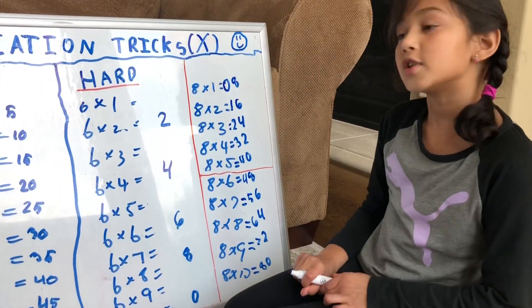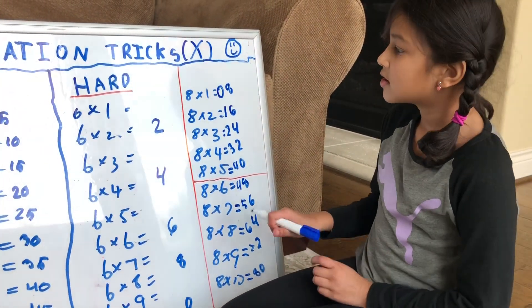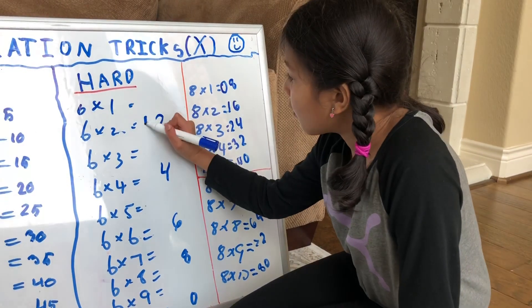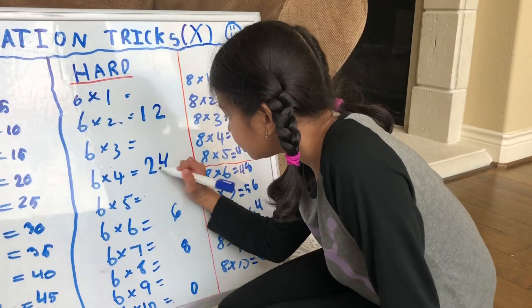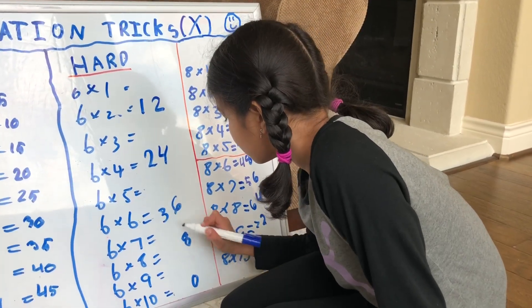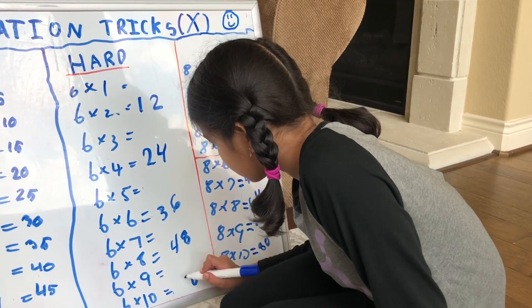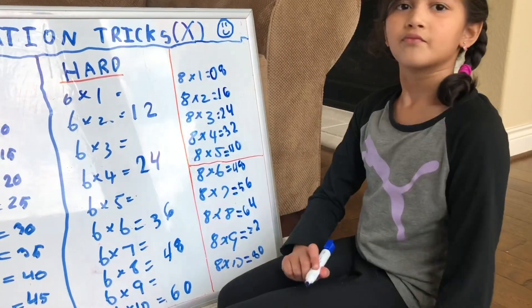Then you're going to move on to the tens. That will be 1, 2, 3, 4, 6. Then you'll have that.